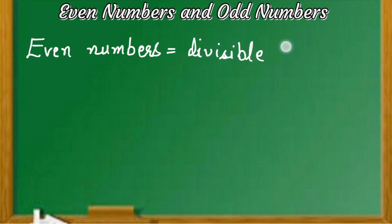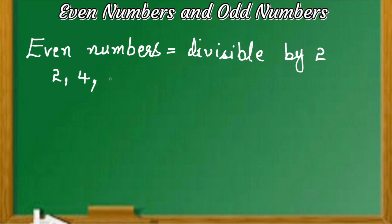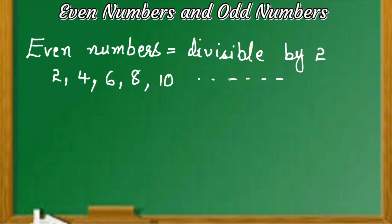Even numbers are the numbers that can be completely divided by the number 2. All the numbers that are completely divisible by 2 are even numbers. Also, all the numbers in which the unit digit is either 0, 2, 4, 6, or 8 are called even numbers.